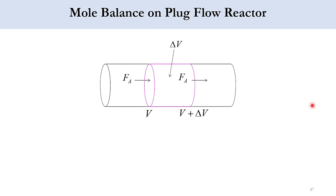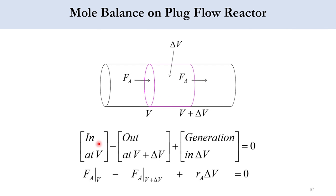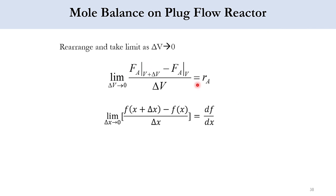Moving to the mole balance on the plug flow reactor, let's assume a certain volume segment in the system. This part is V and this part is V plus delta V. The entrance flow rate into this segment is FA at point V, and the exit flow rate is FA at V plus delta V. Generation is RA times delta V and equals zero because there is no accumulation in this steady state system. Taking the limit and rearranging using the definition of a derivative, we get dFA over dV equals RA.